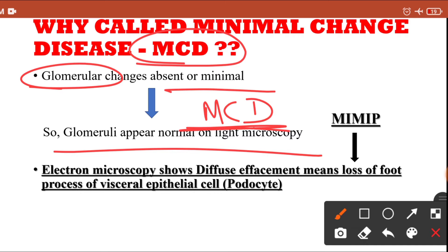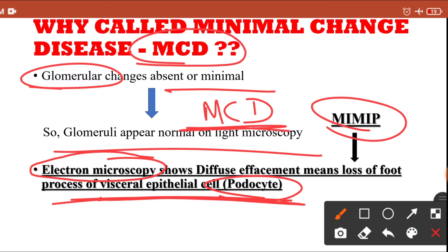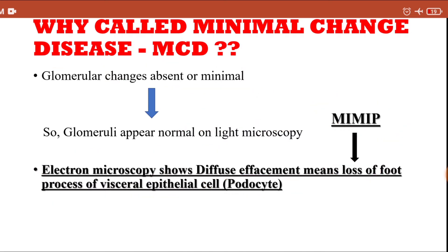You might ask: if the glomerulus is normal, what leads to nephrotic syndrome in minimal change disease? The main event can only be detected by electron microscopy, not light microscopy. On electron microscopy, there is diffuse effacement of visceral epithelial cells, also called podocytes. Effacement means loss — there is a loss of foot processes of the podocytes, which we will see in detail in a subsequent slide.